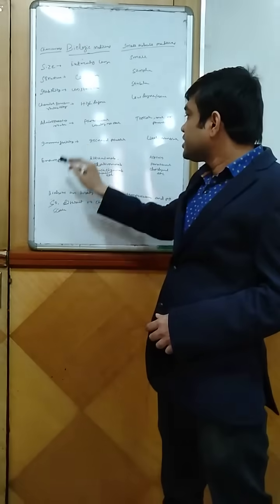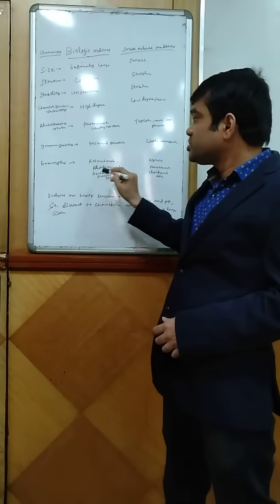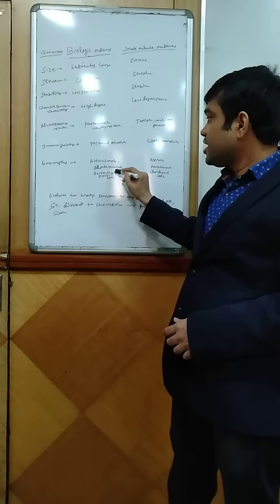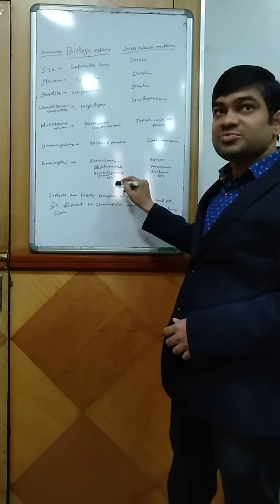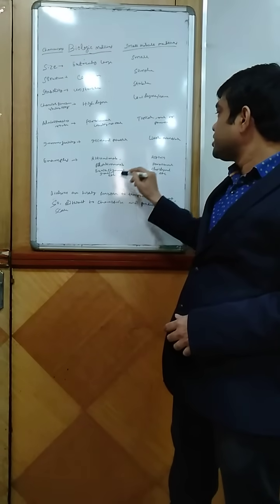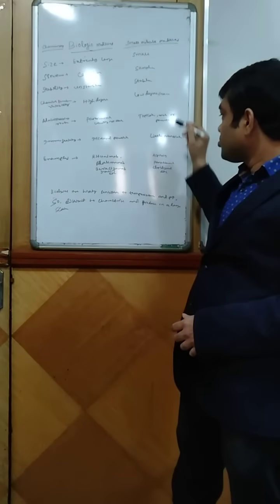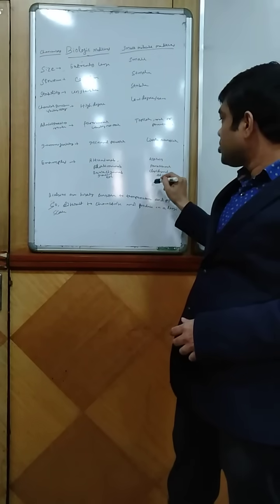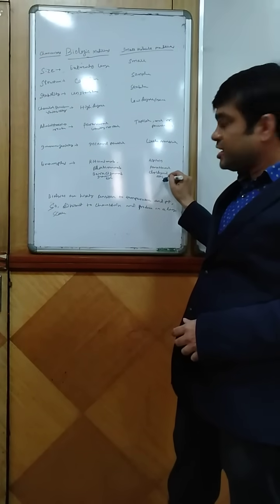Examples of Biologics are Rituximab, Adalimumab, and Insulin. Examples of Small Molecules are Aspirin, Paracetamol, Clopidogrel, etc.